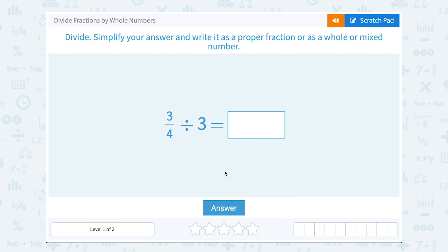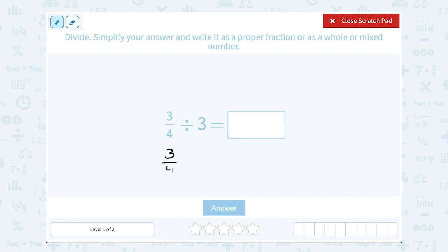Okay, we have 3 fourths divided by 3. Well, remember our rule when we're dividing with fractions is to multiply by the inverse, or another way to say that is to multiply by the reciprocal. So if you think of 3 as being 3 over 1, the reciprocal, or the inverse, is 1 over 3.